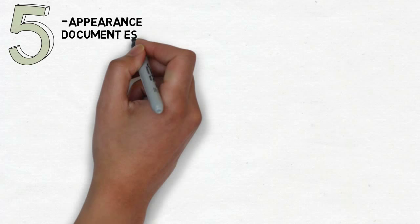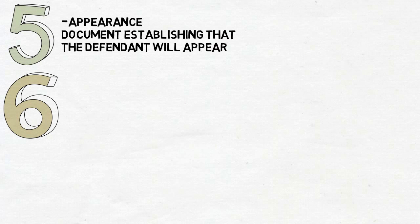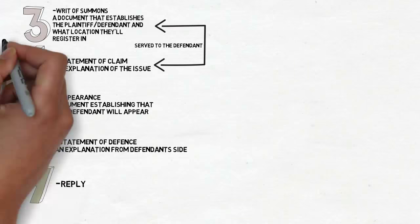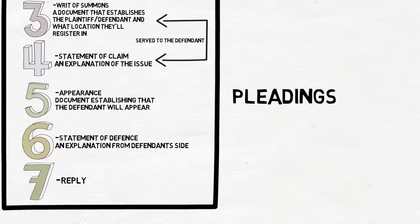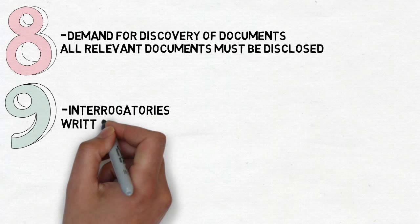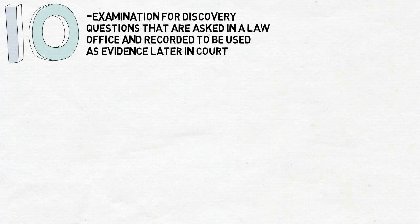Fifth, you have the Appearance — documents establishing that the defendant will appear. Sixth, the Statement of Defense, an explanation from the defendant's side. Seventh, the Reply. All these factors are part of the Pleadings Process, which usually takes approximately three months. Number eight, Demand for Discovery of Documents — all relevant documents must be disclosed. Number nine, Interrogatories — written questions asked by both parties. Number ten, Examination for Discovery — questions asked in a law office and recorded to be used as evidence later in court.